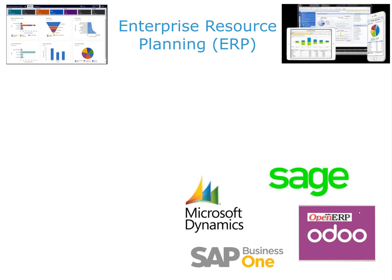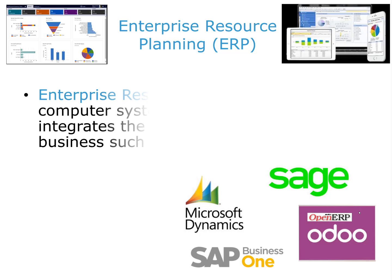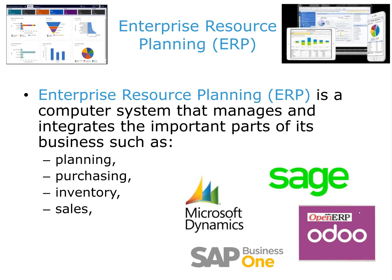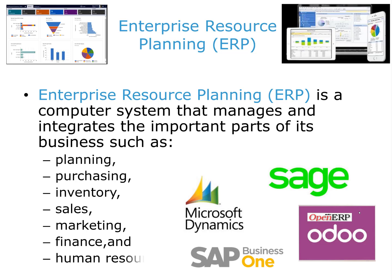Now let's talk about Enterprise Resource Planning, or ERP. An ERP is a computer system that manages and integrates the important parts of a business, such as planning, purchasing, inventory, sales, marketing, finance, and human resources. The central feature of all ERP systems is a shared database that supports multiple functions used by different business units.